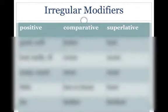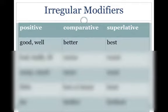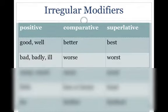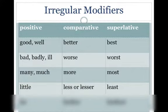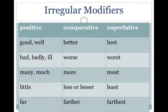Here are some irregular modifiers that form their comparative and superlative degrees in an irregular way. Good or well become better and best. Bad, badly, or ill become worse and worst. Many or much become more and most. Little becomes less or lesser and least. And far becomes farther and farthest.